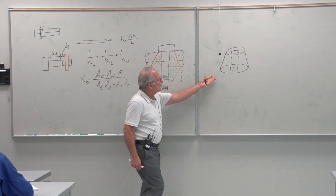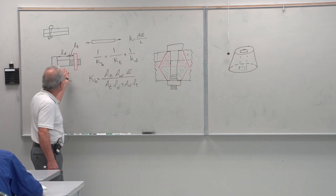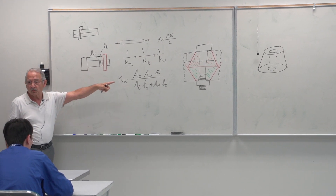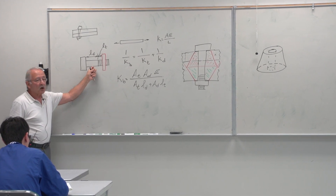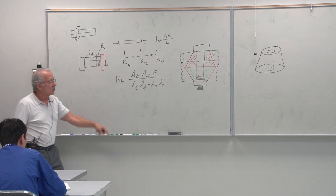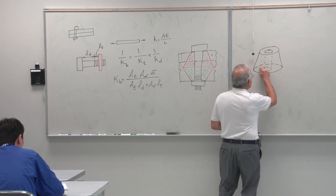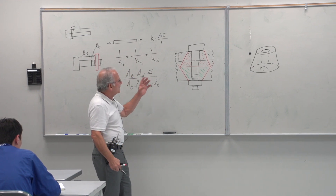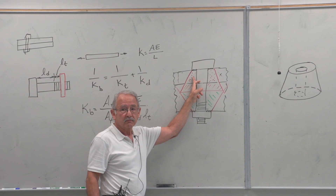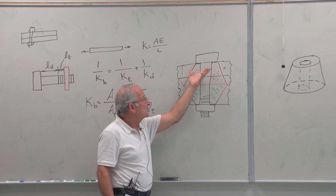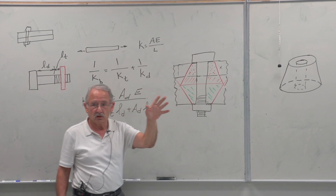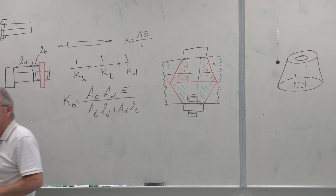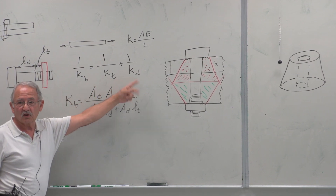This is not very different from the bolt, except for two differences. First, the bolt is under tension while the member is under compression. Second, the bolt has a constant cross-sectional area, but the member does not. The cross-sectional area in the member changes, so we're going to take one frustum, come up with a general equation for its stiffness, apply it to each frustum, then combine them as springs in series to get the member stiffness.